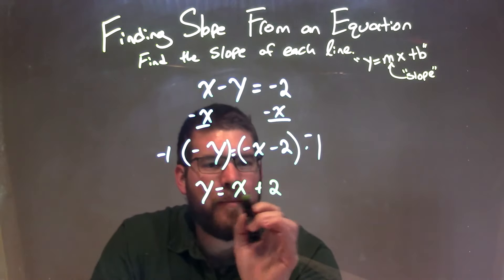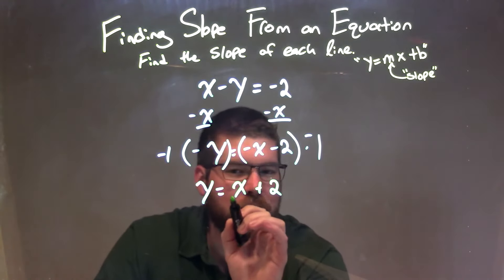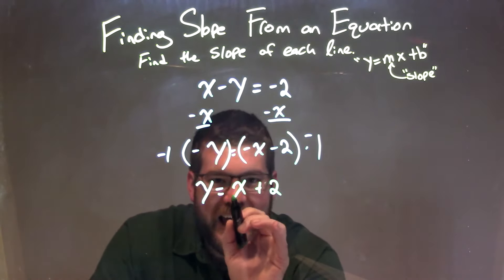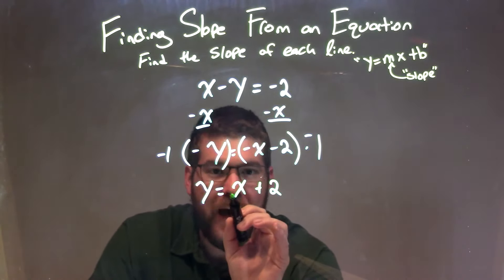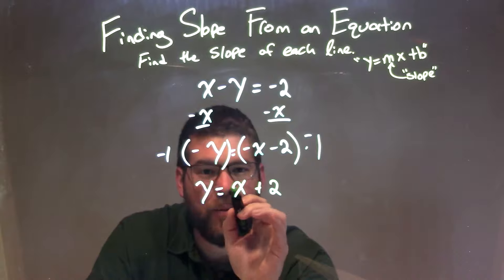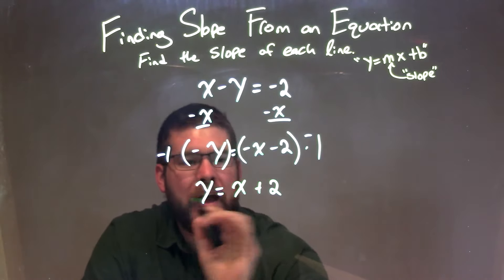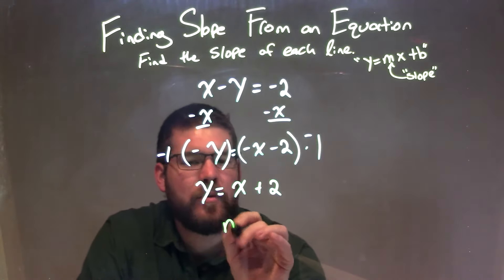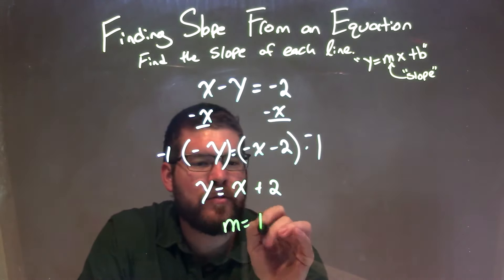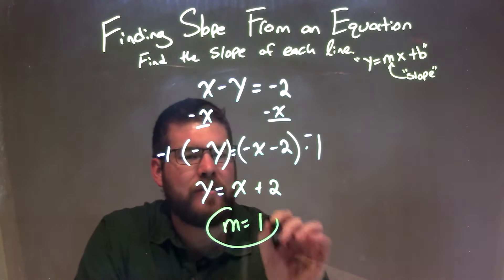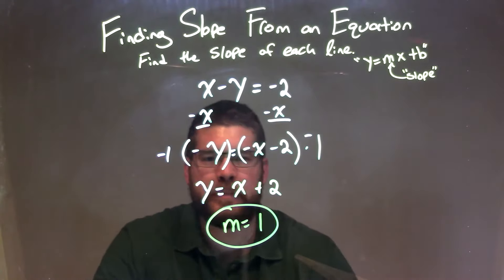y equals mx plus b. Now, don't miss it — m is what's in front of x. That's just a 1. So there's an imaginary 1 in front of x there. So we have m equals 1 as our final answer.